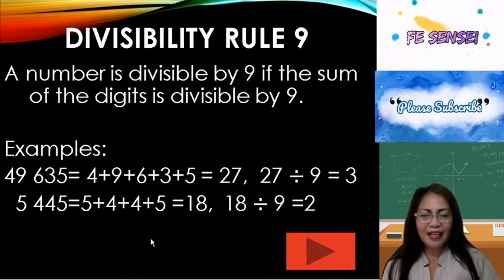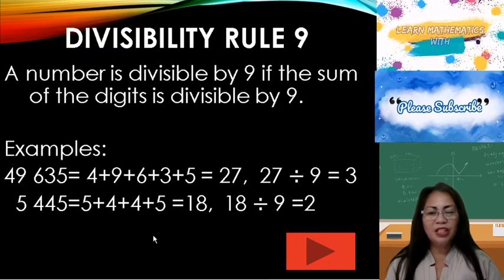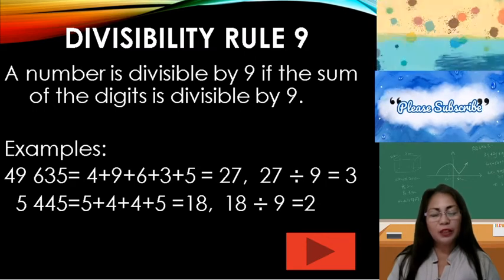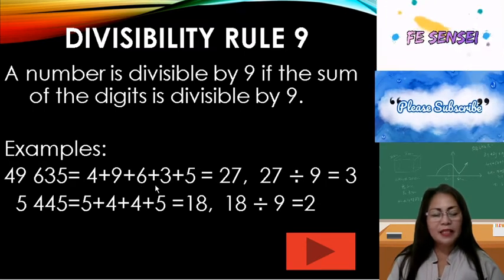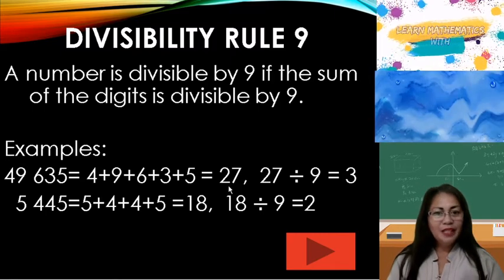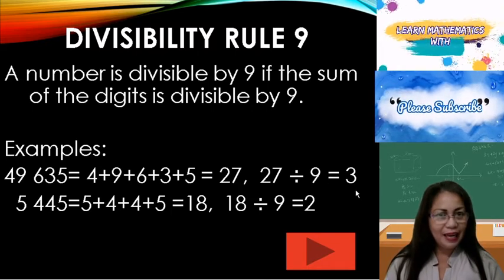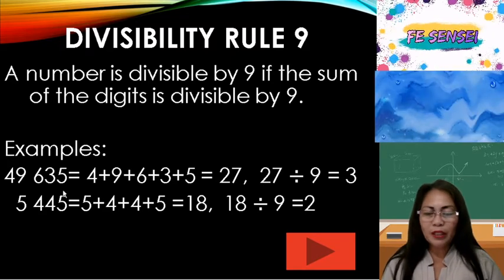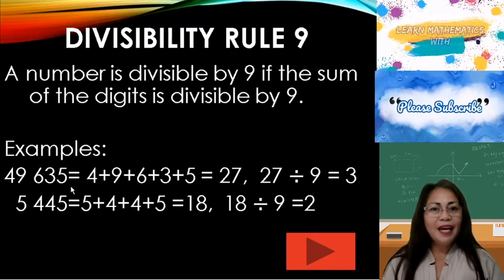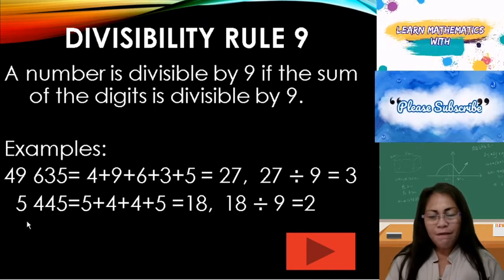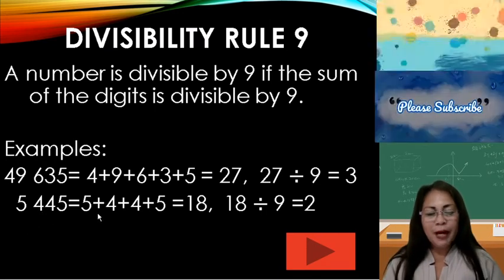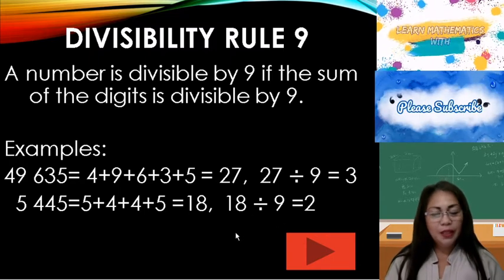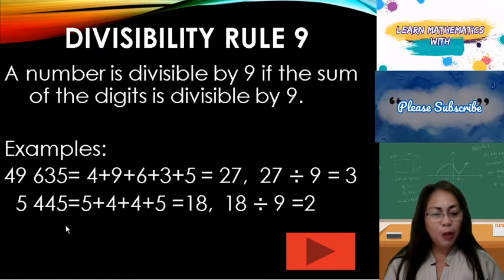Divisibility rule 9: A number is divisible by 9 if the sum of the digits is divisible by 9. Example: 49,635 — 4 plus 9 plus 6 plus 3 plus 5 equals 27; 27 divided by 9 equals 3, and 27 is also a multiple of 9, therefore 49,635 is divisible by 9. Another example: 5,445 — 5 plus 4 plus 4 plus 5 equals 18; 18 divided by 9 equals 2, therefore 5,445 is divisible by 9.